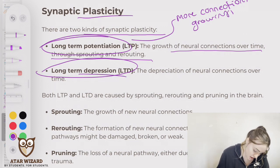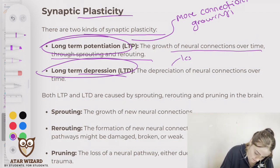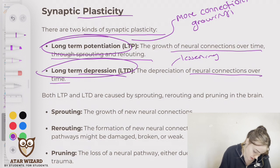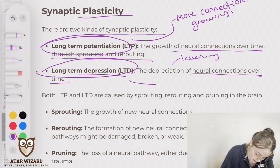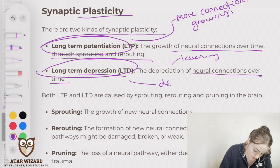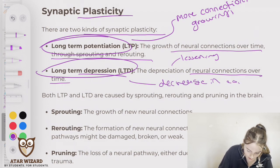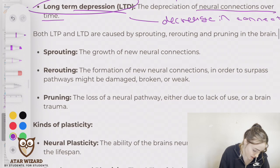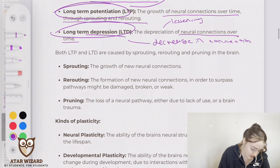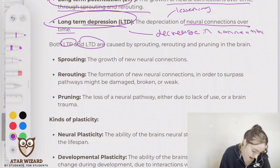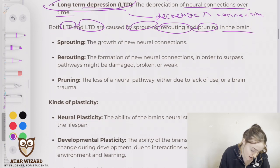Long-term depression is the opposite — the depreciation or lessening of neural connections over time, so there is going to be a decrease in connections. We call these LTP and LTD, and they are caused by sprouting, rerouting, and pruning in the brain.